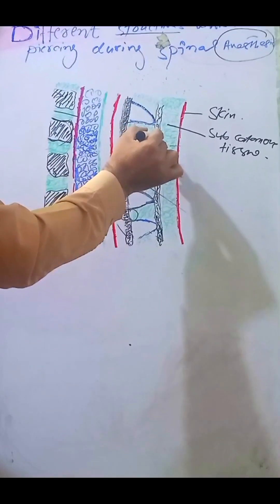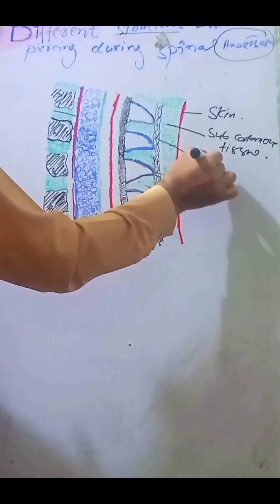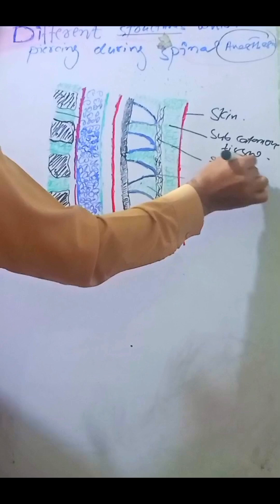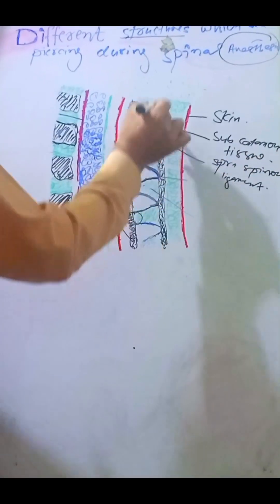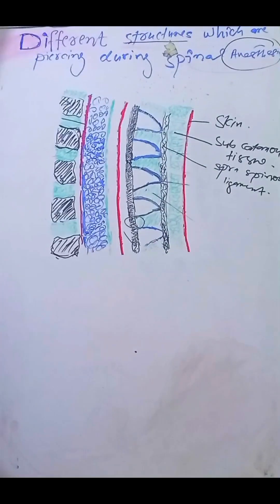The third one which we pierced is supraspinous ligament, which lies above the spinous process of vertebra.